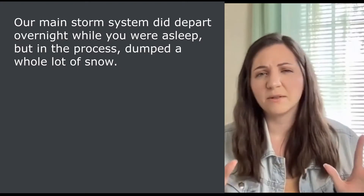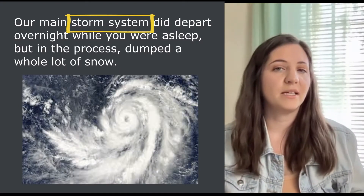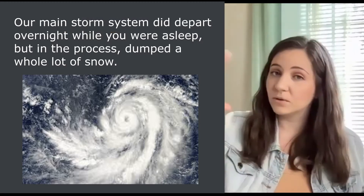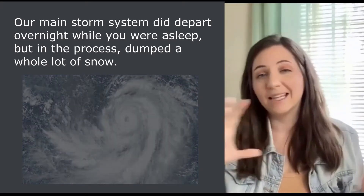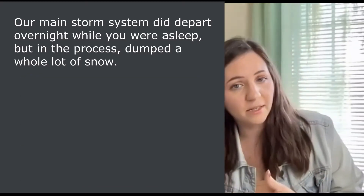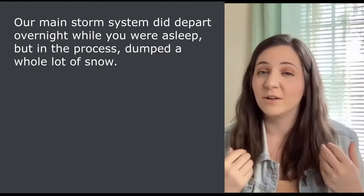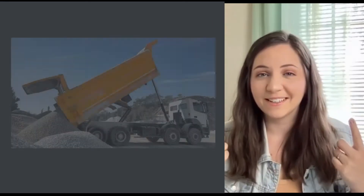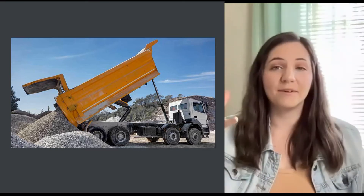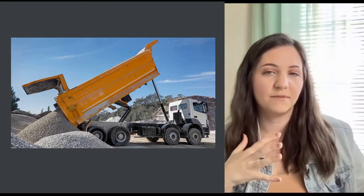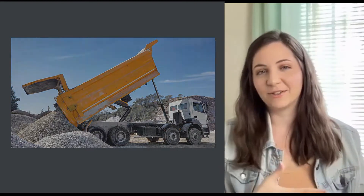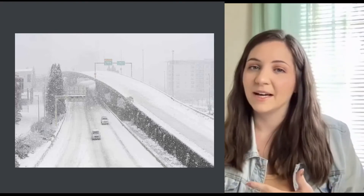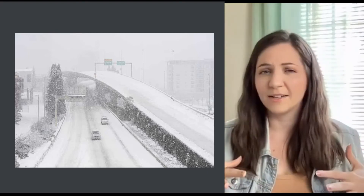So first let's talk about storm system. A storm system is simply a collection of storms, and she is saying that this whole storm system has left the area. It departed overnight, and not only does she say that it snowed a lot, she uses the word "dumped." If you think about a dump truck or a garbage truck — how it can tip everything over and dump all of the contents out — that's the image she's using to describe the snowfall. So it departed overnight and dumped a whole lot of snow when it did.